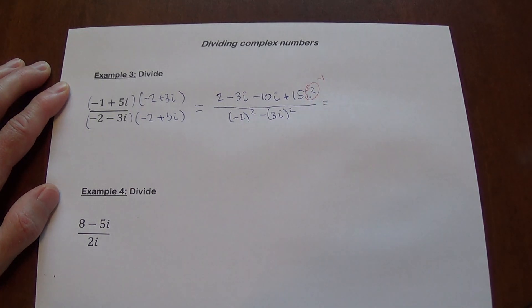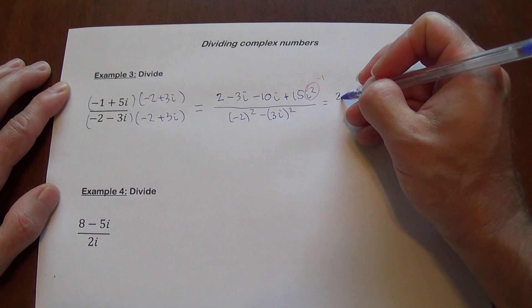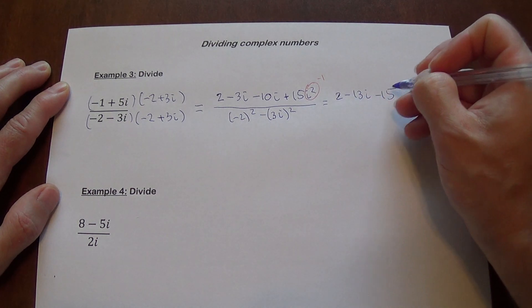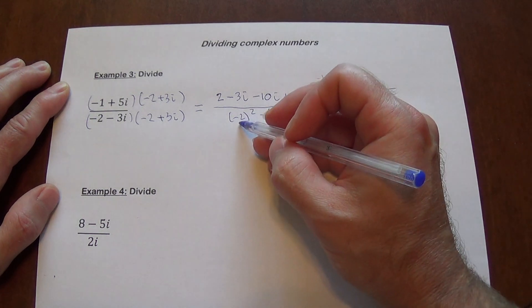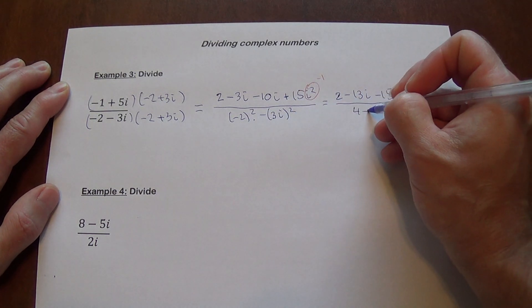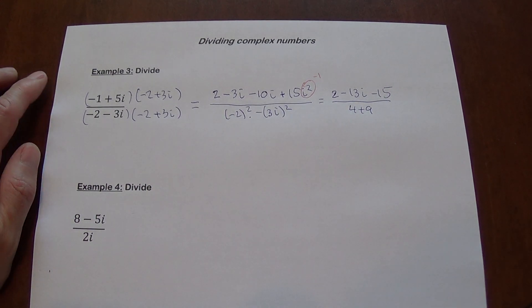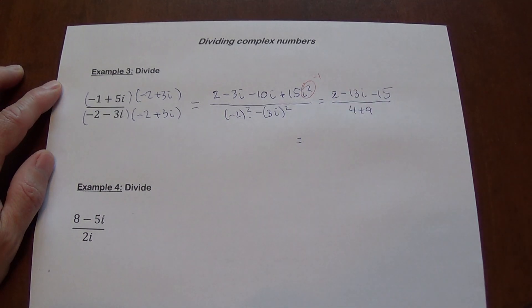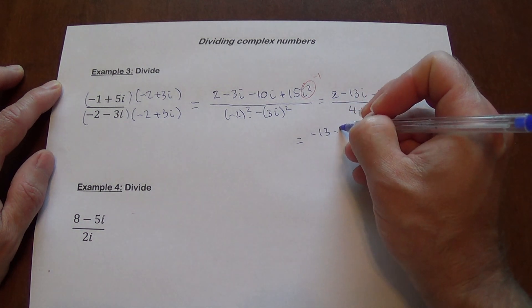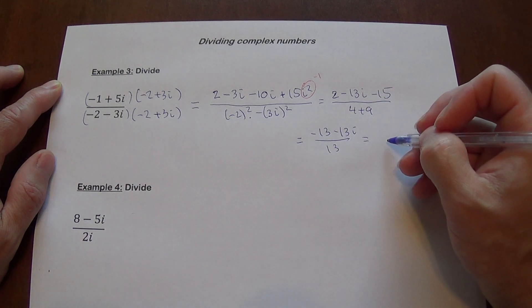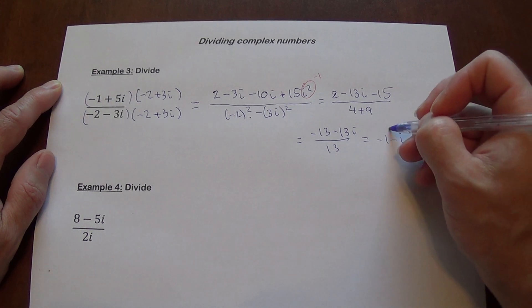So this will give you negative 1. So we have 2 minus 13i minus 15 over, this is 4 plus 9, which is 13, right? So we are going to get negative 1 minus 13i divided by 13, which is going to give us negative 1 minus i.